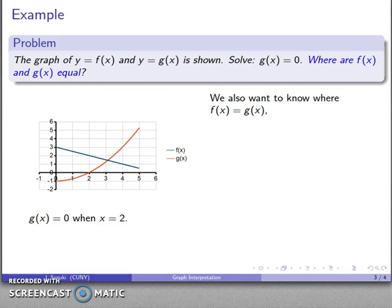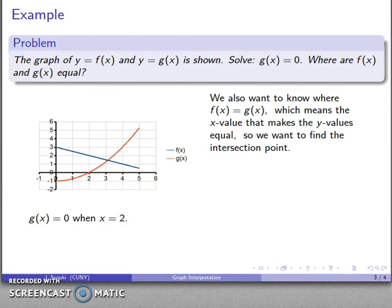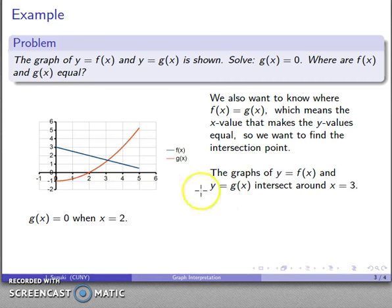How about where f(x) and g(x) are equal? That means the y values are going to be equal, so I want to look for the intersection point. The intersection point's right around here, close to x equals three. Very important to notice here, I'm not looking for the y value of that intersection point. I want f(x) and g(x), I want an x value. The two graphs intersect around x equals three, and to indicate it's an approximate value, I'll use the approximation symbol.